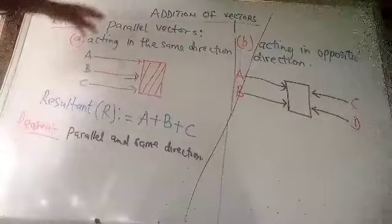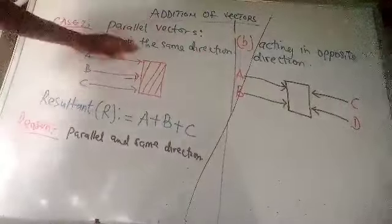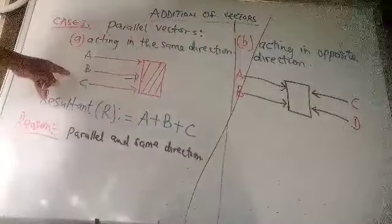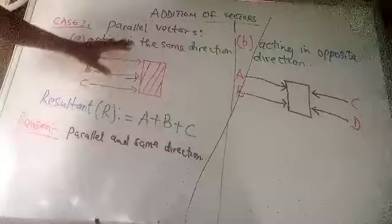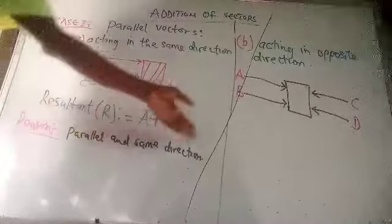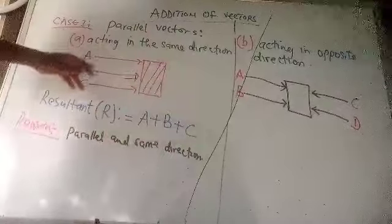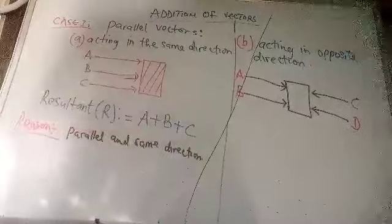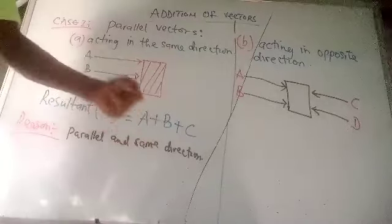Under Case A, the parallel vectors are acting in the same direction, as you can see in the diagram. So since they all are acting in the same direction, the resultant will be the straight addition of the three: A plus B plus C. The reason is parallel and same direction.